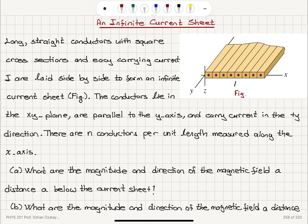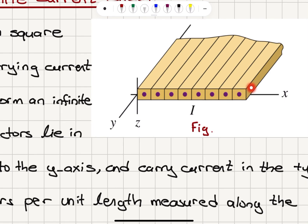An infinite current sheet. Long straight conductors with square cross sections, each carrying current I, are laid side by side to form an infinite current sheet. The conductors lie in the XY plane, as you can see they are all on the XY plane. They have a square cross section and current is coming out because this is a dot.